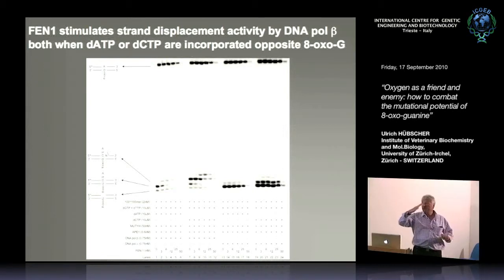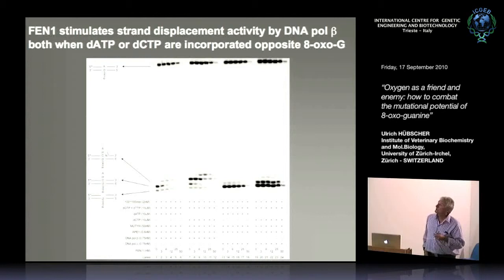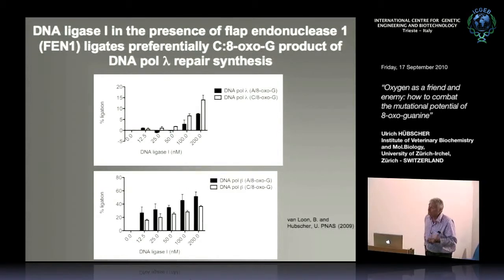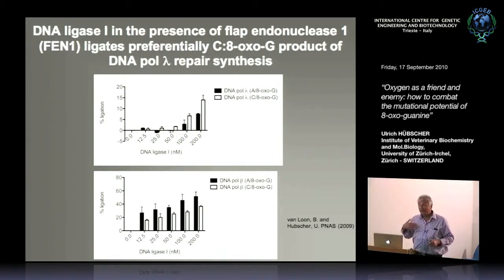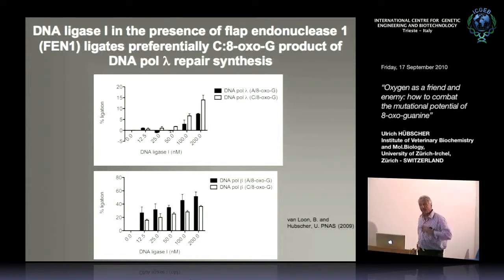Regarding ligation: an additional protein FEN1 is needed, suggesting strand displacement occurs — the enzyme displaces the strand and FEN1, a structure-specific endonuclease that cuts single-stranded flaps, stimulates strand displacement activity regardless of whether A or C is incorporated. When we carefully seal the final product, ligase 1 — the lagging strand enzymatic machinery — preferentially ligates the situation where C is correctly incorporated. This suggests a switch between two repair mechanisms depending on whether faithful or unfaithful incorporation occurred.